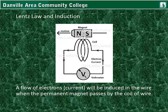The faster the magnet moves by the coil, the closer it is to the coil, and the greater the length of the coil concentrated in a small area, the greater the electron current.